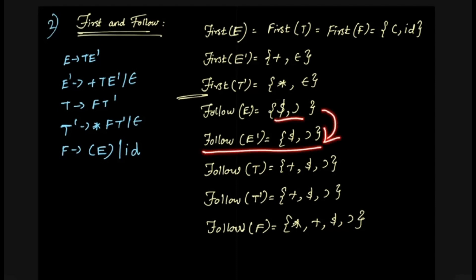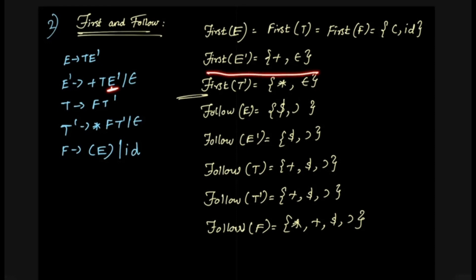So I look at FOLLOW of T. FOLLOW of T is based on the right-hand side production. T is on the right-hand side production. I look at FIRST of E-dash and see that it contains plus. So FOLLOW of T is the right-hand side. If we look at FIRST of E-dash, we have a plus. If there is also empty in FIRST of E-dash, then we take the union of FOLLOW of E. We see FOLLOW of E as dollar and close bracket.